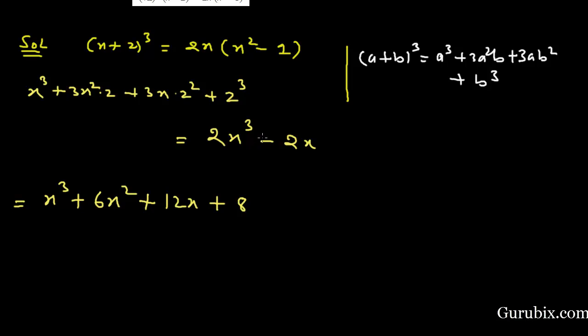And we shall take the values in the right hand side to the left hand side. Then this equals -2x³ + 2x = 0.